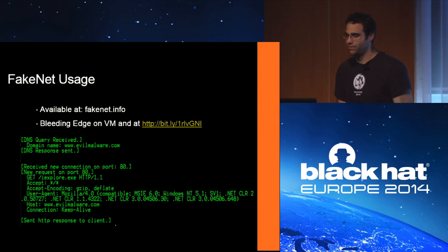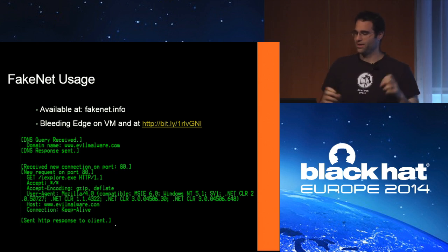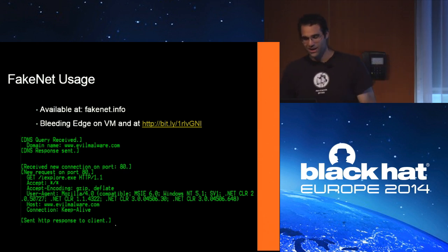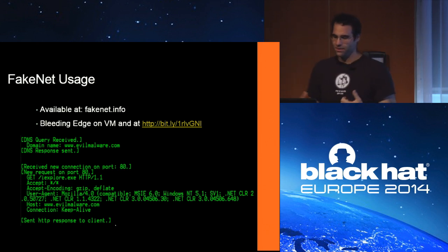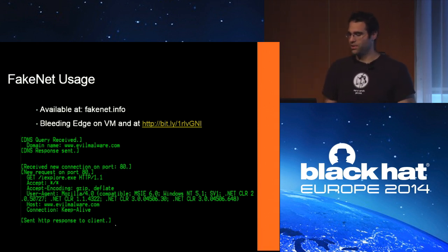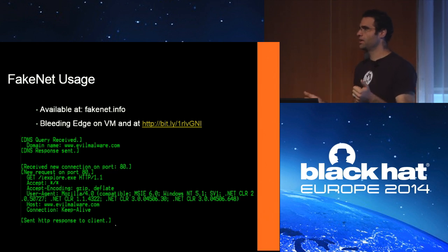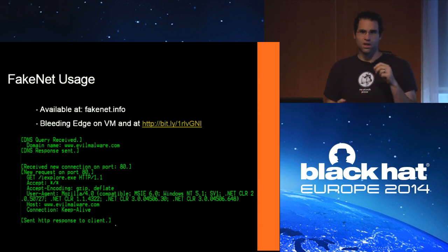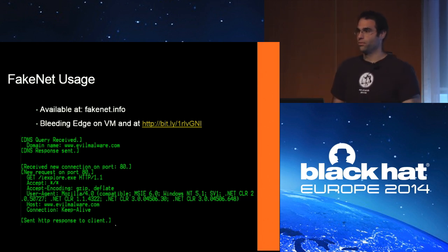Here's what FakeNet looks like in use. The malware runs, does a DNS query, you see the domain name, then it calls GET on an HTTP request, it shows the request, the user agent, and other headers and options. You already get some decent indicators for the malware — what domains it's using, what user agent it's using, which is often a good signature. All you really had to do was run FakeNet and then run the malware.